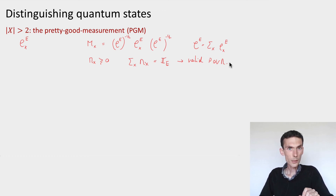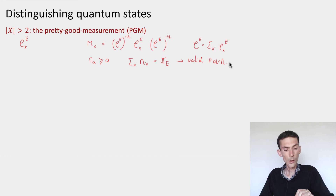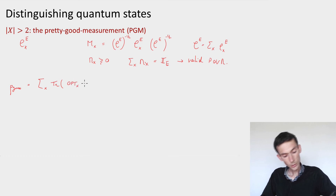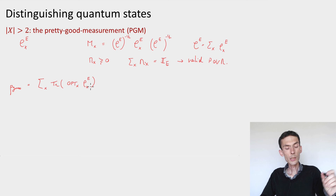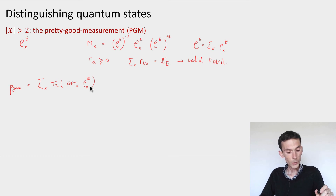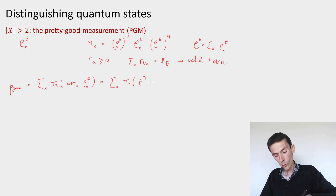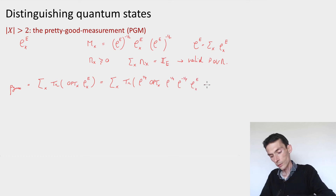Now the question is how good is this strategy. Let's start from the optimal guessing probability and compare it to the guessing probability arising from the pretty good measurement. The optimal guessing probability equals the sum over x of the trace of M^{opt}_x rho_{xe}, where M^{opt}_x is any POVM achieving the optimum. To make the pretty good measurement appear, let's introduce artificial factors: write this as the trace of rho_E^{1/4} M^{opt}_x rho_E^{1/4} times rho_E^{-1/4} rho_{xe} rho_E^{-1/4}, where the factors in the middle cancel and the outer factors cancel by cyclicity of the trace.